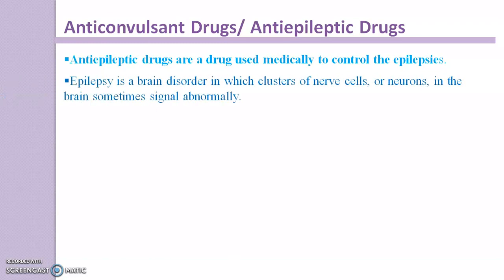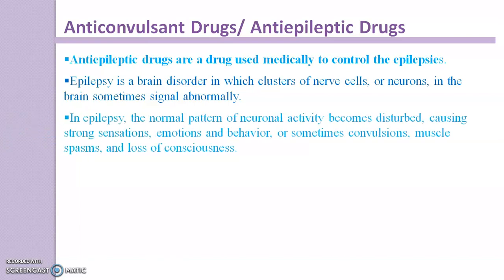Epilepsy is a brain disorder in which clusters of nerve cells or neurons in the brain sometimes signal abnormally. In epilepsy, the normal pattern of neuronal activity becomes disturbed, causing strong sensations, emotions and behavior, or sometimes convulsions, muscle spasm and loss of consciousness.